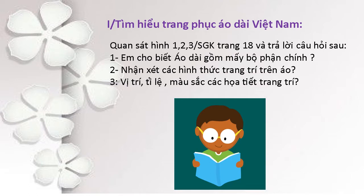Câu thứ 2, em hãy nhận xét các hình thức trang trí trên những chiếc áo dài ở 3 hình trên. Và số 3, chúng ta sẽ nêu cho cô vị trí, tỷ lệ, màu sắc của các họa tiết trang trí trên những chiếc áo dài này.